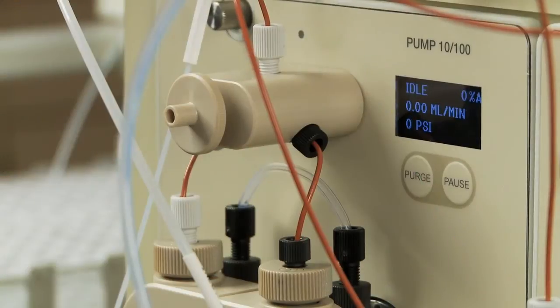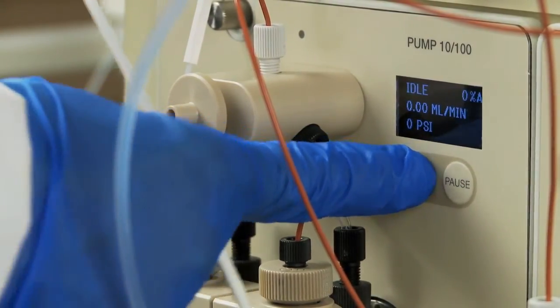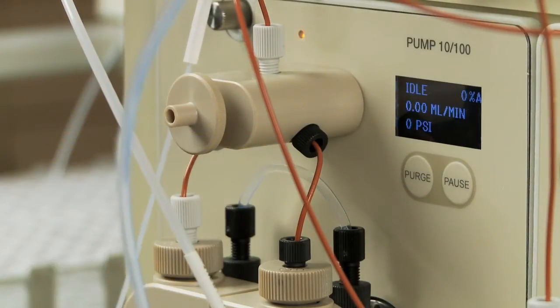To purge the system using the faceplate, use the purge buttons to start and stop the purge. Perform this procedure on each pump individually for approximately two minutes.